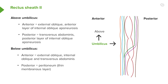Above the umbilicus we have external oblique, indicated here in blue. In orange we can see the skin of the body. External oblique is anterior to rectus abdominis, and here we can see the rectus abdominis muscle. Below the umbilicus, external oblique is still present — it just always lies anteriorly.